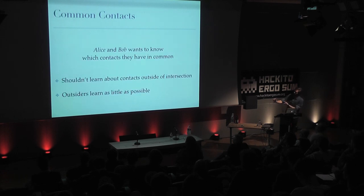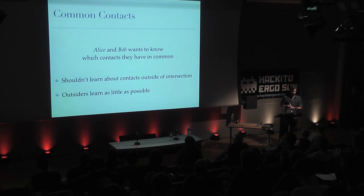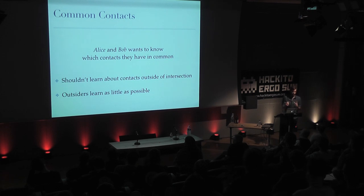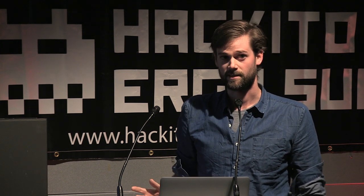So we've covered partial homomorphic encryption and somewhat homomorphic encryption. The breakthrough that came a few years ago is what we call fully homomorphic encryption, where you can actually run any arbitrary circuit — an arbitrary number of multiplications and additions — which represents any function. Today it's not practical, but people are working on that.